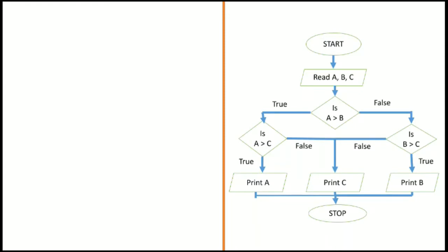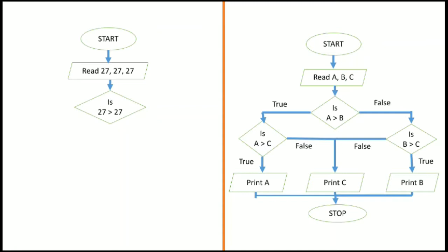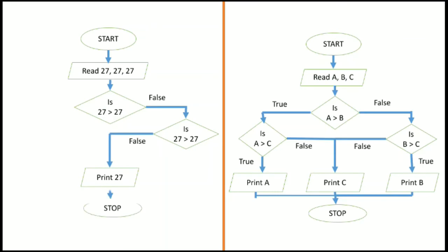Now we take another example where all 3 numbers are equal — A = 27, B = 27, C = 27. First, we compare A with B: is 27 greater than 27? No, it is not true. So now we compare B with C: is 27 greater than 27? No, it is not true — the condition is false. So the largest number is 27 and we stop.